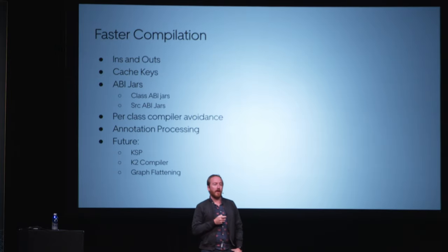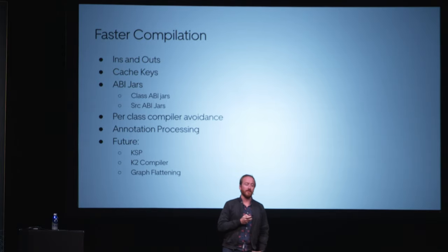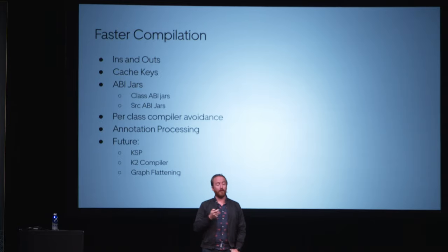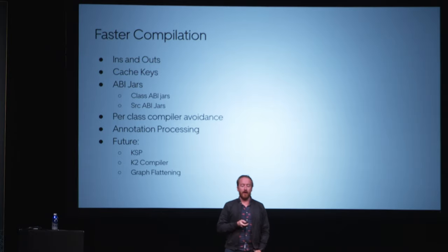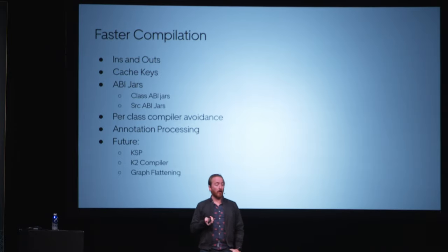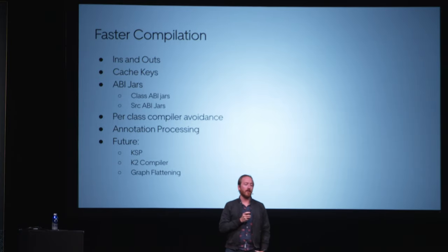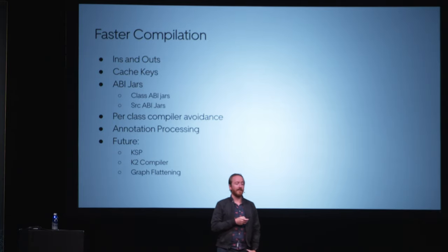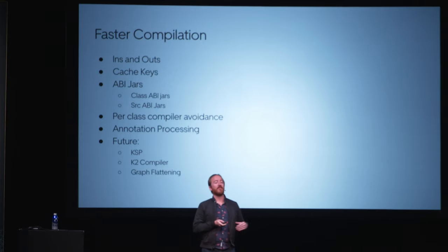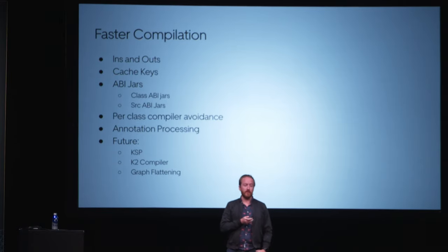Going forward, we have some things we're looking at. We're really excited about the K2 compiler and will be working closely with that team in Q1 to shadow and give feedback. We're also excited about KSP — we've already ported many of our internal annotation processors to KSP, and our open-source RDI library Motif was just recently moved to support KSP. And lastly, we're going to look at flattening our build graph more, since one of the big problems with a mobile monolith is the depth of that dependency graph.